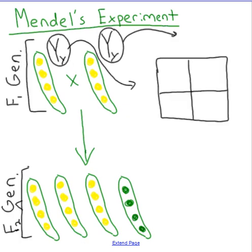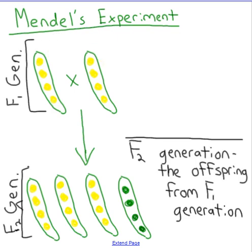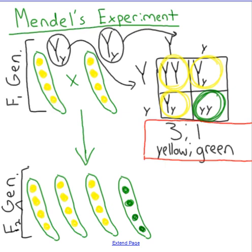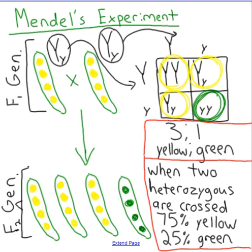The next step is where he learned quite a bit. He took two individuals from the F1 generation — both heterozygous big Y, little y — and crossed them to produce the F2 generation. Working through the Punnett square with big Y, little y crossed with big Y, little y, he saw a true 3-to-1 ratio: three yellow pea plants for every one green, resulting in 75% yellow and 25% green.